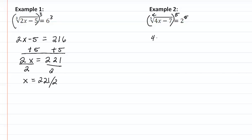So, we're going to get 4x minus 7, equal to 2 to the fifth power, which is 32, add 7 to both sides,